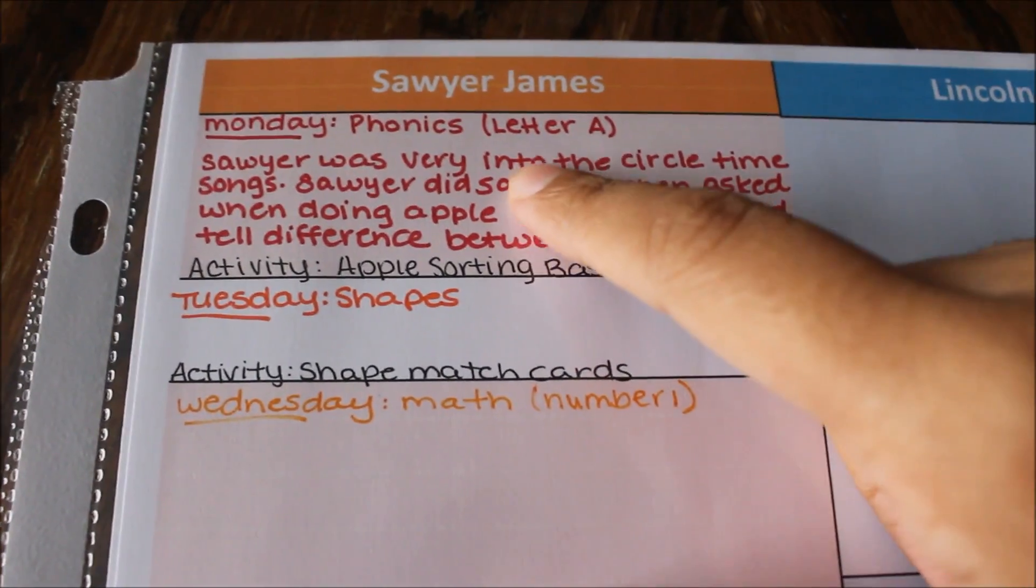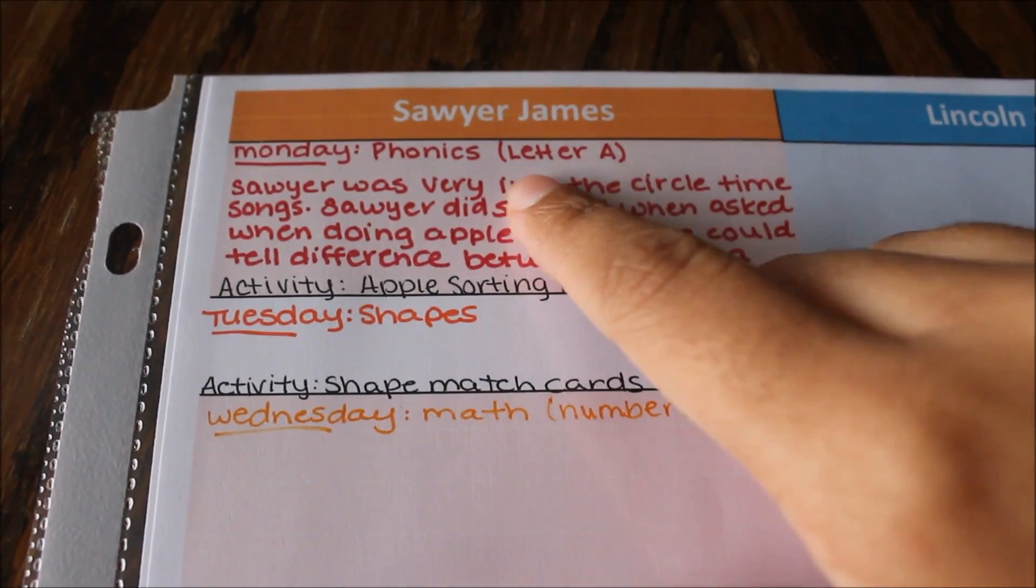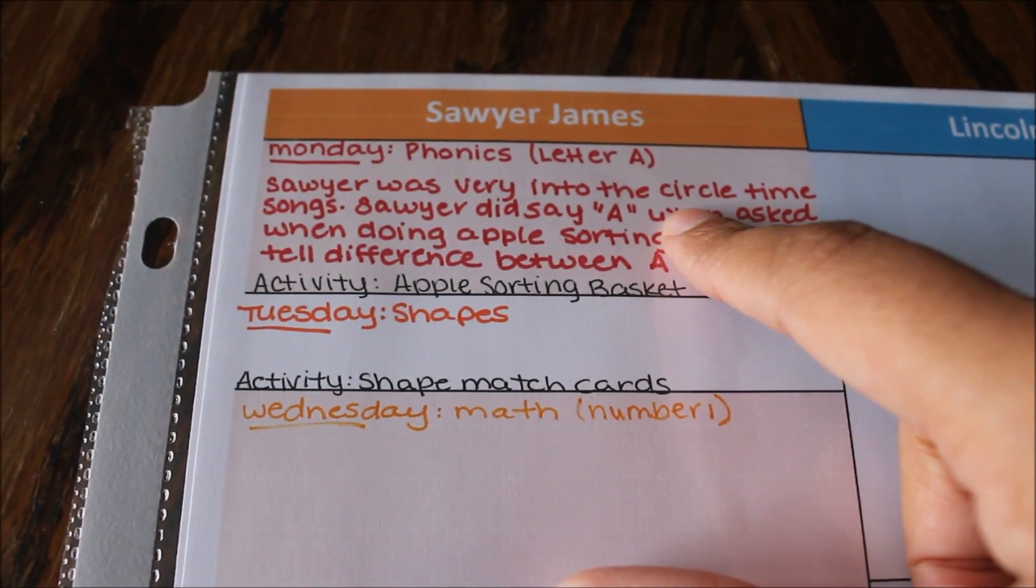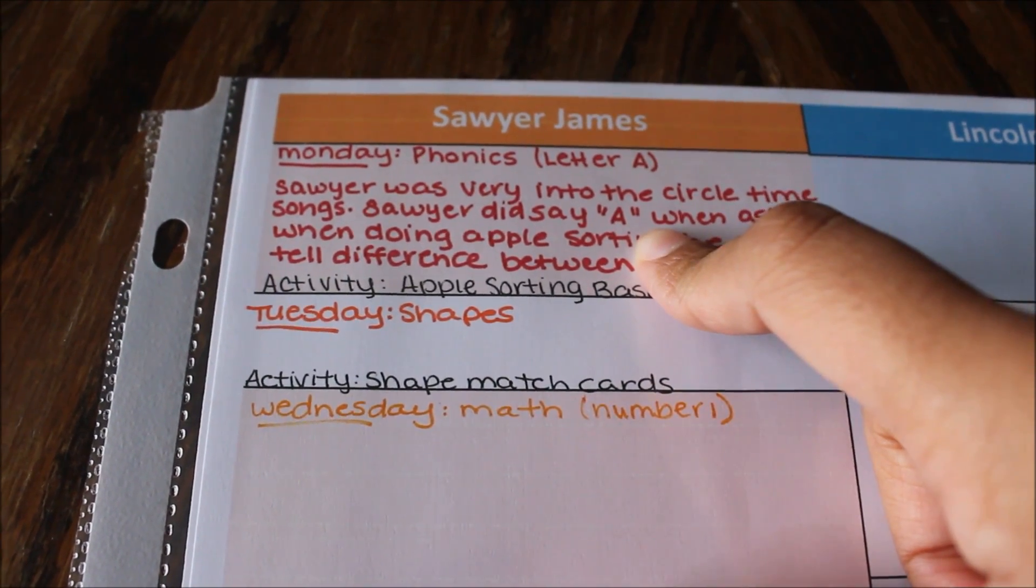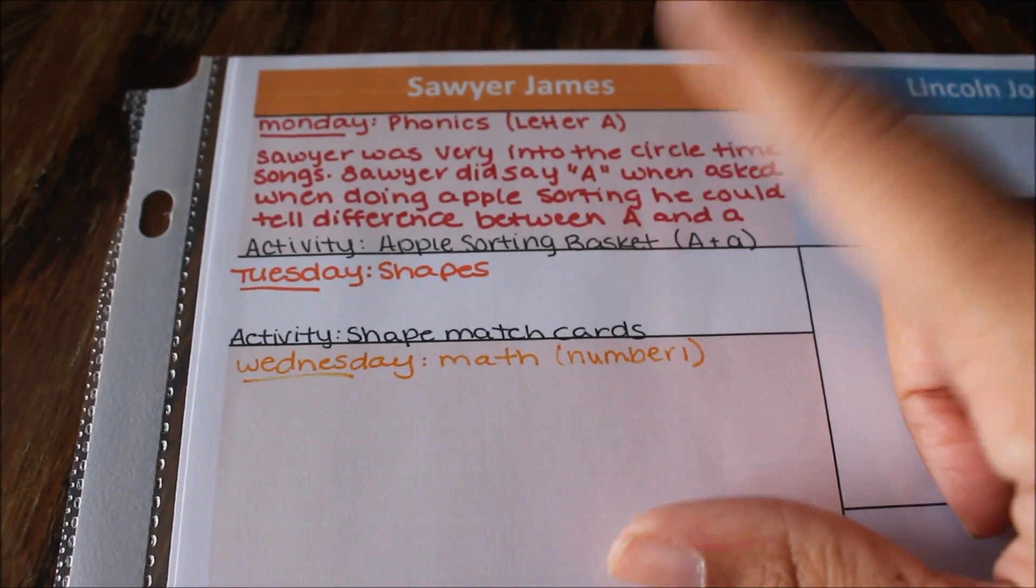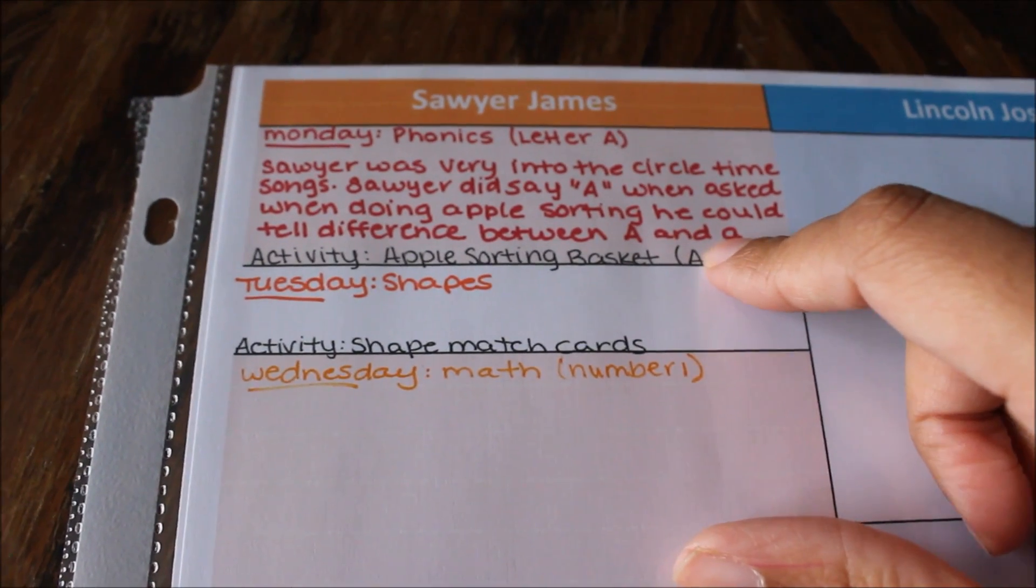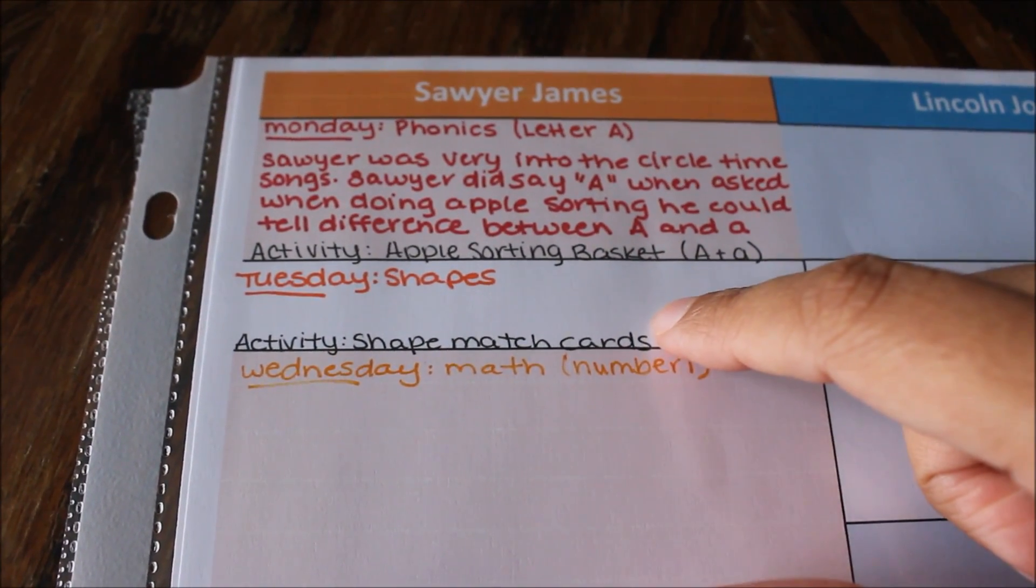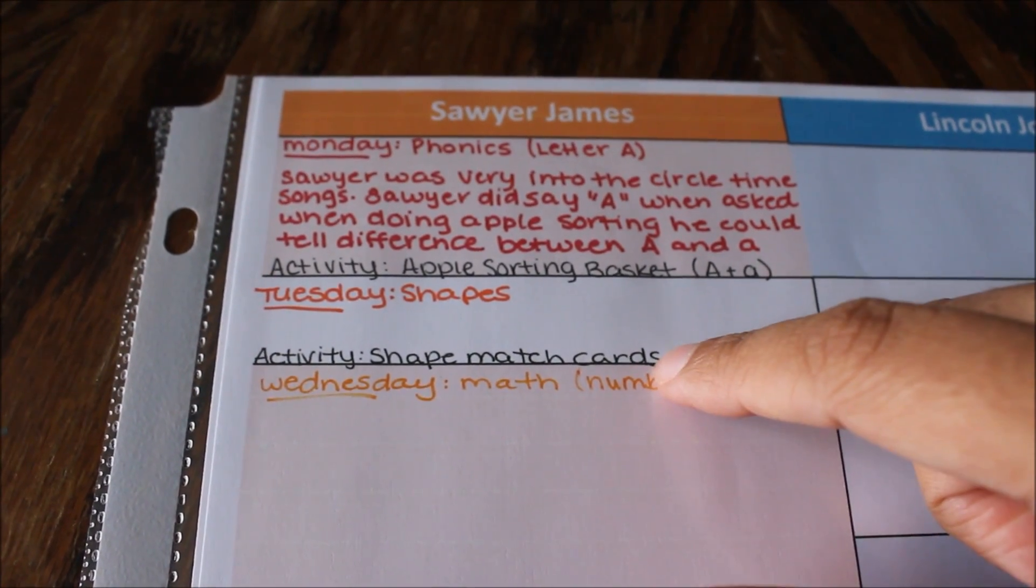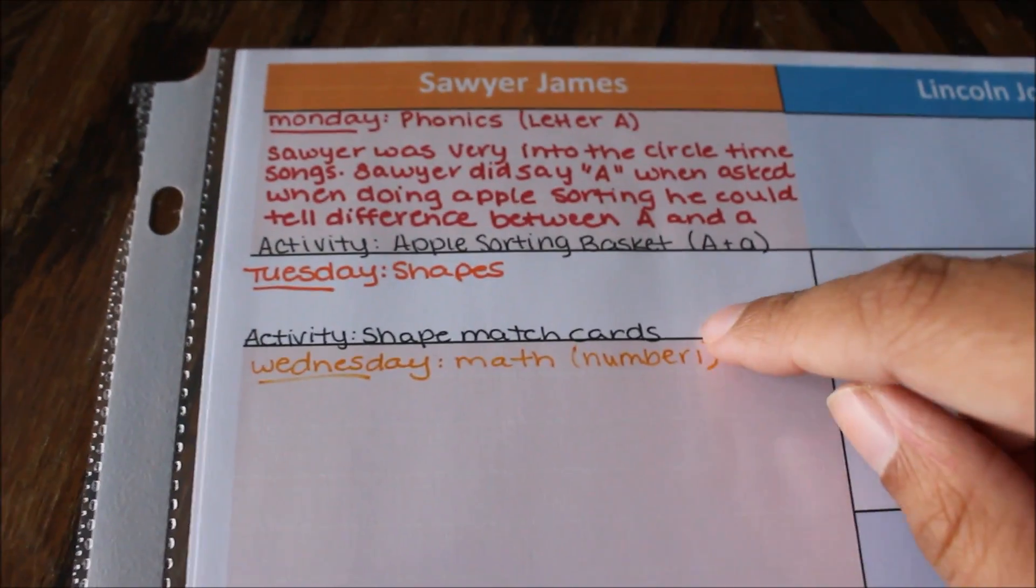Here's Monday, today's phonics and we are doing the letter A this week. So what I do is I write down what we're doing, what activity I have planned, and then after that day what he did and how he did. Today was the letter A, we did an apple basket sorting for big A and little A. Tomorrow is shapes and we're doing a shape match card.